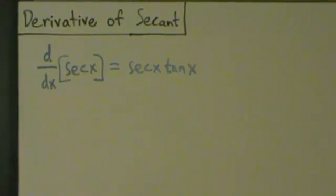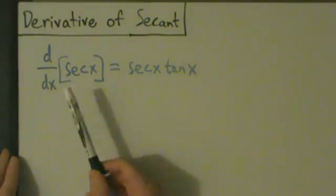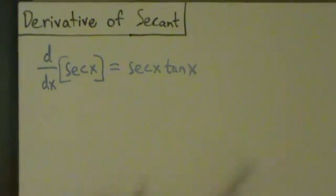All right, let's go ahead and do the derivative of secant now. This will probably be a little bit easier than tangent, actually. The derivative of secant of x equals secant of x times the tangent of x.